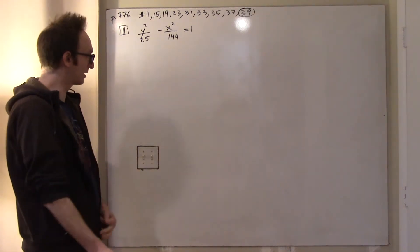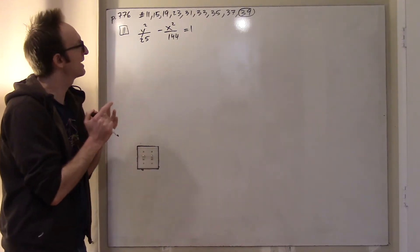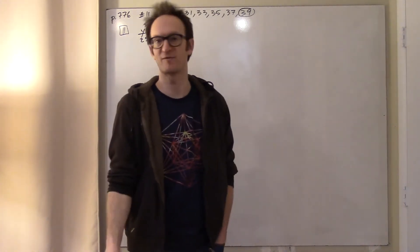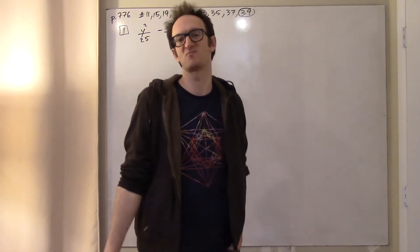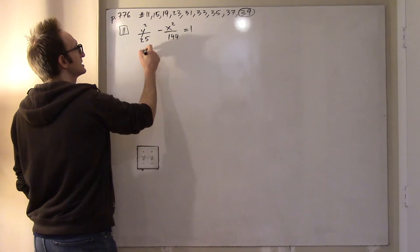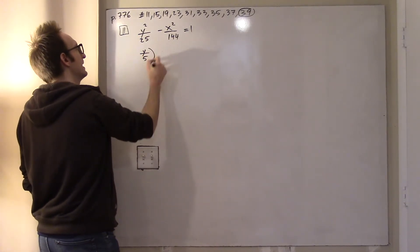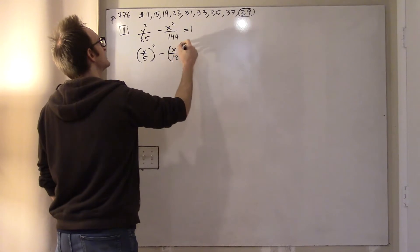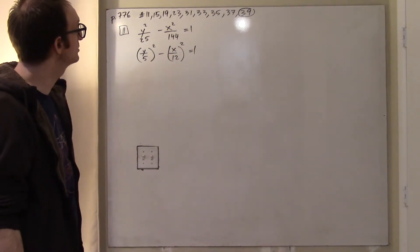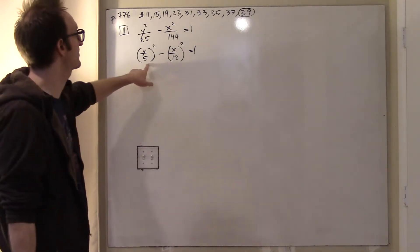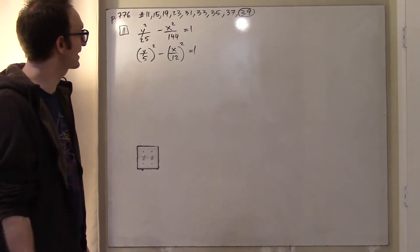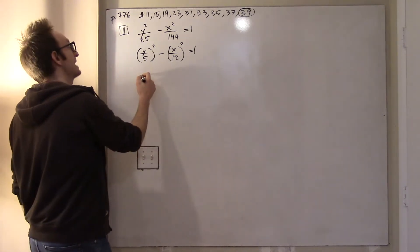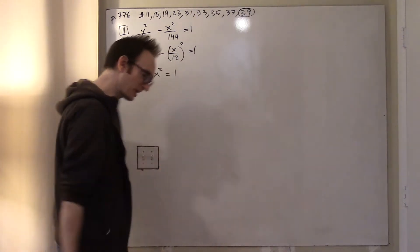Even if you almost didn't know anything about hyperbolas, I think you could figure this out. It's possible to just memorize the formulas and chug through them, and to some extent I encourage that. But let's think through this. y² over 25 is best thought of as (y/5)² minus (x/12)² equals 1. The y coordinate is being stretched by a factor of 5, and the x coordinate by a factor of 12.